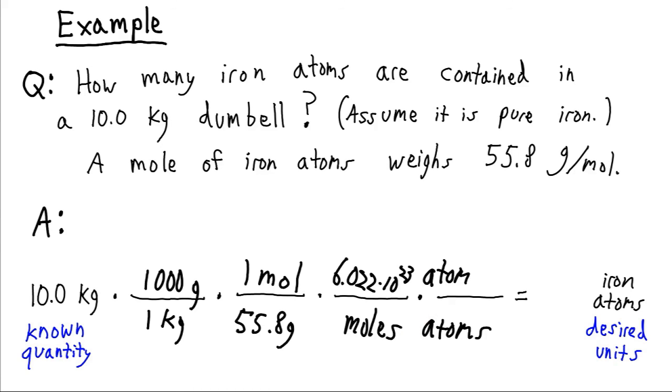We can go ahead and multiply this all out. And I get 1.07 times 10 to the 26. This is a pretty big number. This is on order of about 100 times the number of stars known to exist in the universe. That's how many iron atoms there are in just that small weight. So that's why we need this huge conversion factor here. So we're dealing with such immense quantities on this scale.